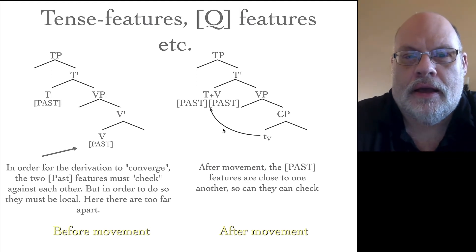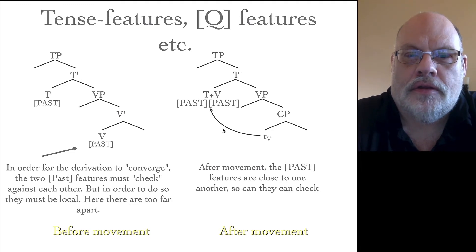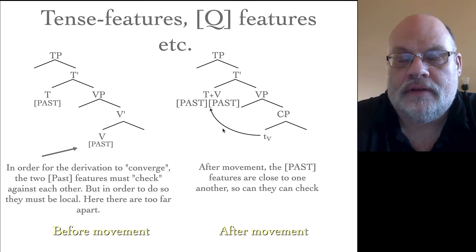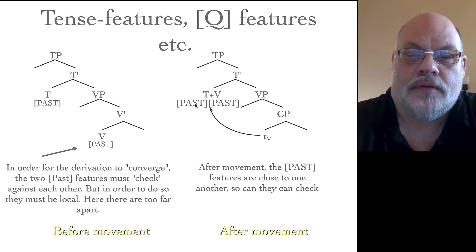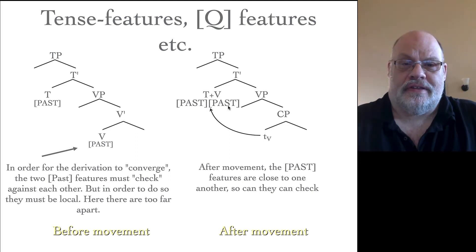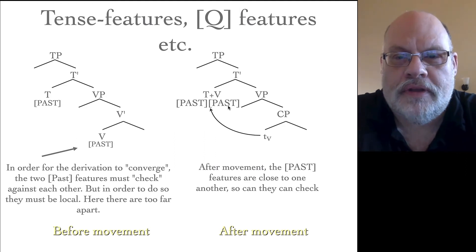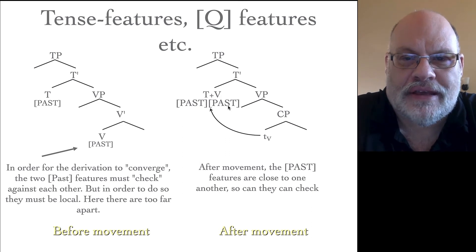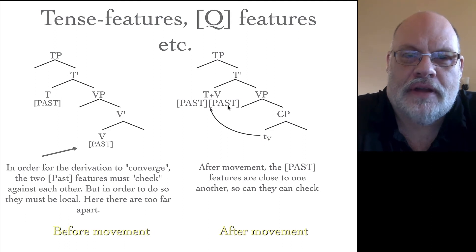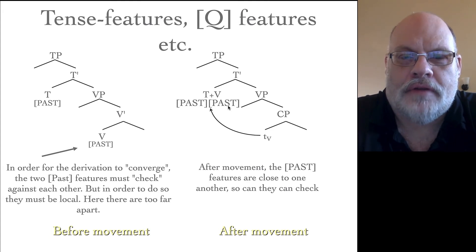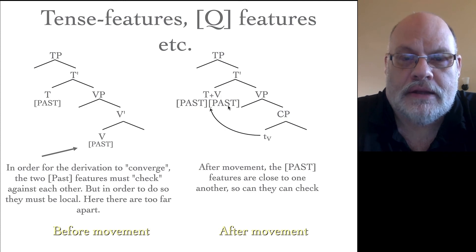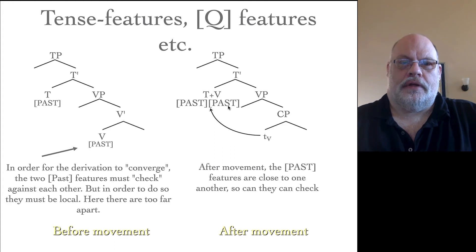What do these three processes have in common? They all involve moving elements of the tree in order to make sure that the features actually match. This seems to be a general property of language: you are forced by X-bar theory and the properties of individual lexical items to generate like things in different positions in the tree. They're far apart from one another, but your computational component wants to make sure that everything is consistent and licensed — whether that's nominative case, WH features, or tense features.